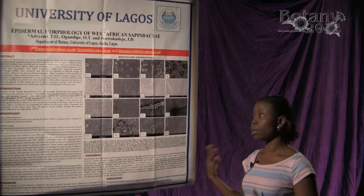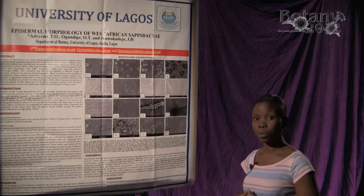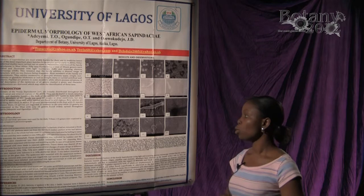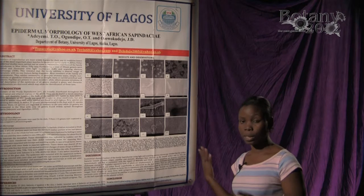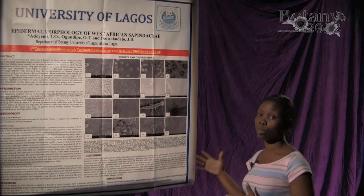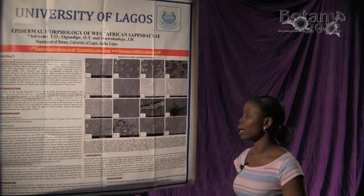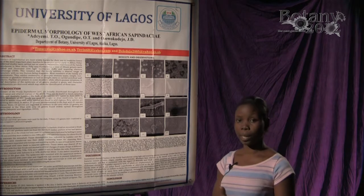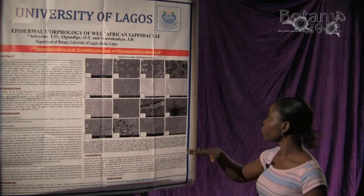I've been able to go around and take samples from different West African countries and then examine the leaf samples, the foliar morphology of the samples. The methodology I used was first identification and authentication of the samples, putting the correct names to each. Afterwards, I prepared a herbarium specimen for record and reference, and then I looked at the morphology of each sample using light microscopy and scanning electron microscopy.